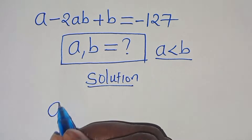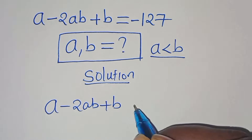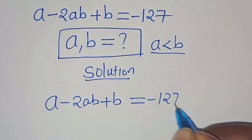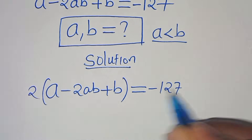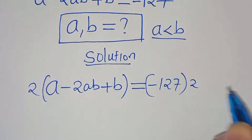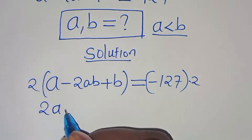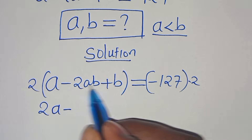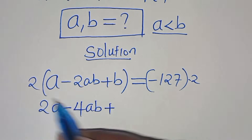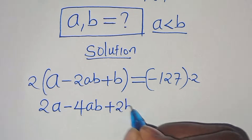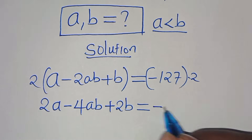We have a minus 2ab plus b equals minus 127. The first step is to multiply both sides by 2, so we have 2a minus 4ab plus 2b equals minus 254.